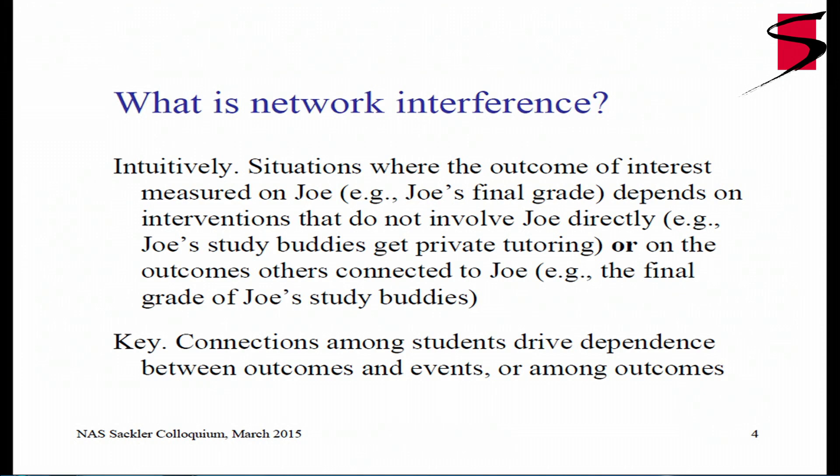What is network interference? Intuitively, here is a very simple example. There's a situation where the outcome of interest measured on an individual — for example, Joe's final grade — depends on interventions or treatments that do not involve Joe. For example, Joe's study buddies get private tutoring. That doesn't involve Joe, but somehow has an effect on the outcome. Or, the outcome of interest measured on Joe is connected to outcomes of others — the final grade of Joe is related to the final grade of Joe's study buddies. The key is that there are connections among students, and these connections — a network of who studies with whom — drive the dependence between outcomes and events.